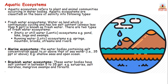The brackish water ecosystem has a salinity that is between freshwater and marine — more than 5 ppt but less than seawater. Examples of brackish water ecosystems include estuaries, salt marshes, mangrove swamps, and forests.